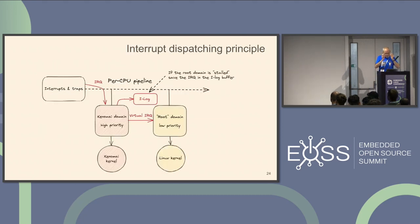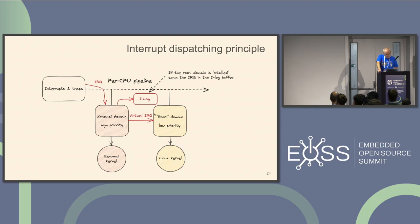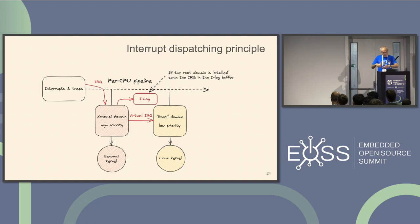This is the interrupt dispatching principle. You get an interrupt; the first domain — the Xenomai domain — receives it. If the interrupt is for the Xenomai domain, attached to the Xenomai driver, it's handled by the Xenomai domain. If it is not, a virtual IRQ is sent to the root domain. If there is a problem with the handling by the root domain, the IRQ is put in a buffer called iLog, then handled after when the domain is ready.